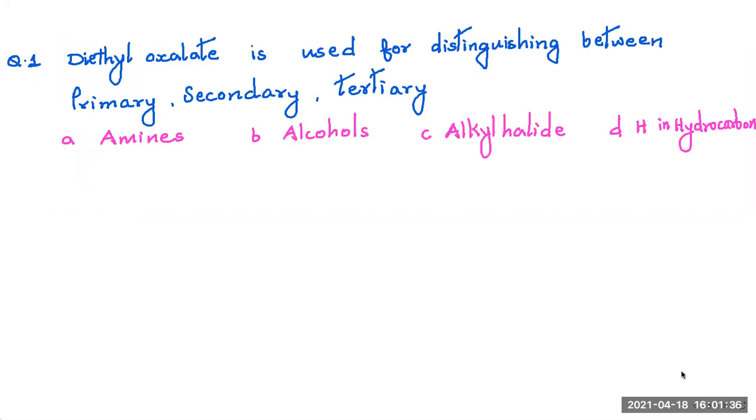Diethyl oxalate is used for distinguishing between primary, secondary, and tertiary. Students, the answer here is amines. Let's see the equation. Diethyl oxalate - you know oxalic acid is COOH, COOH. Now it is diethyl oxalate, so H will be replaced by the ethyl group. Plus, say I treat it with amine R-NH2, you all know that's a primary amine.